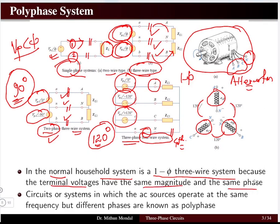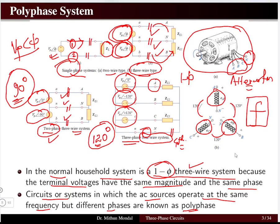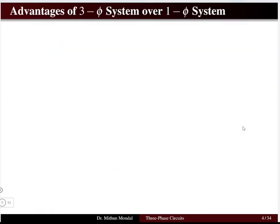In a normal household single-phase three-wire system, the terminal voltages have the same magnitude and same phase. When terminal voltages have the same magnitude and phase, although three wires exist, it is a single-phase system. A polyphase system is one where AC sources operate at the same frequency but different phases — the frequency remains the same but the phase changes.